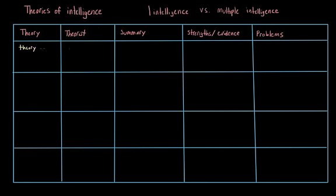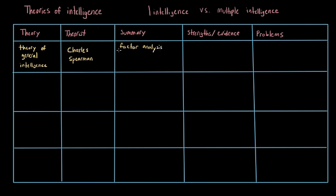The first theory I want to talk about is the theory of general intelligence, put forth by Charles Spearman. He used factor analysis, which is a statistical procedure, to identify clusters of related abilities. He predicted the idea of a general intelligence, sometimes referred to as the g-factor, or just g, and predicted that this general intelligence could predict our outcomes in varied academic areas.